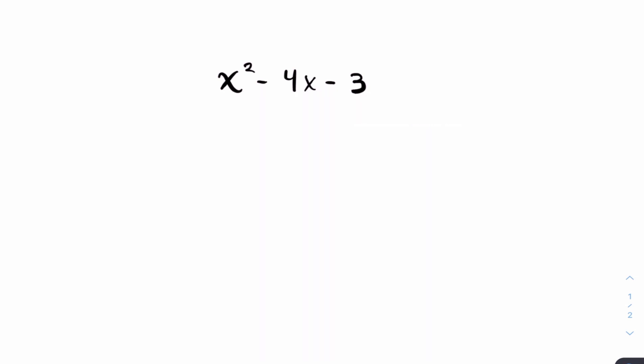So I'm going to show you the fastest way. Negative b over a gives you the sum of the solutions. Let's put it in.